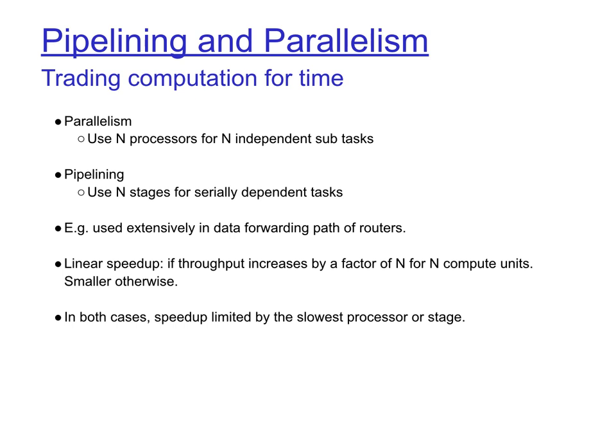Applying the bottleneck principle to pipelining: the slowest stage along the pipeline limits the throughput of the entire system. Similarly, if n parallel processors need to synchronize at some point, the slowest processor again limits the achievable parallelism.